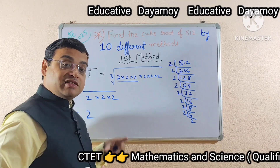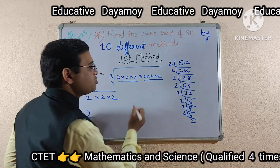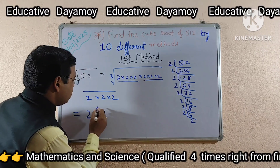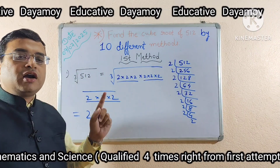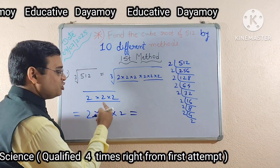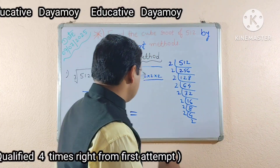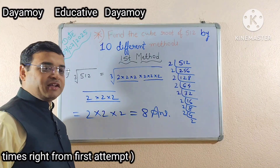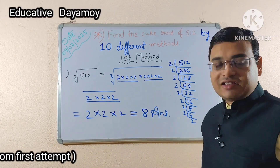Now again the same thing is proceeding here. From the next three 2s you will get 1 two here. I will write again 2. Now from this set of three 2s again 1 two is coming out. Now this 2 into 2 into 2 — what are you getting here? 8. So 2 into 2 into 2 becomes 8. You can see here that in the first method I have done cube root of 512 and you are getting the answer 8.